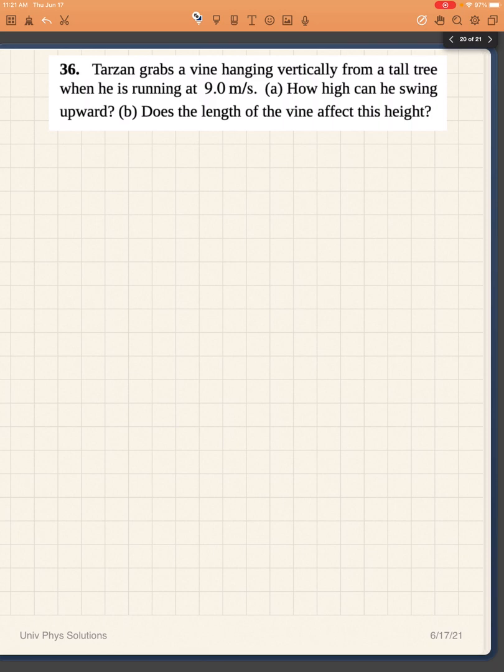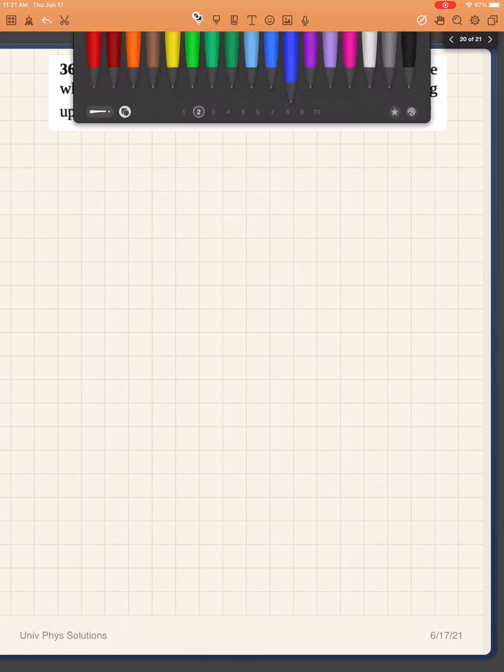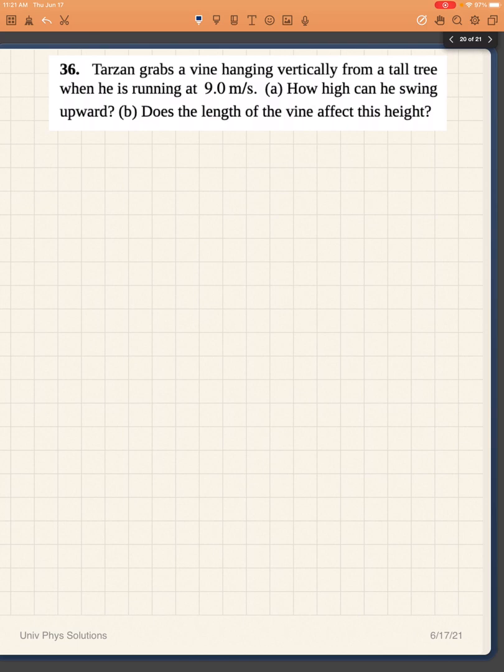So this is a conservation of energy problem. Since we are not given any information about frictional losses or the energy to bend the vine or even the mass of the vine, the only things we have to consider are the initial kinetic energy of Tarzan and his final kinetic energy and potential energy.